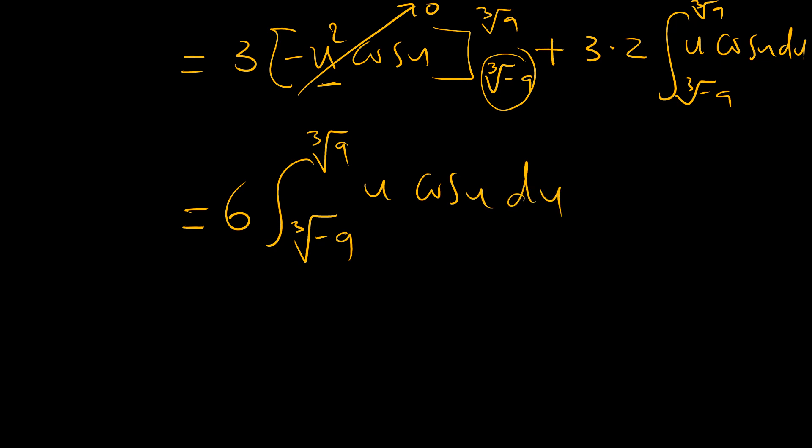By the way, the 6 comes from multiplying 3 and 2. We're going to use integration by parts again, where I would express cosine u as the derivative of sine u. This means that our problem now becomes 6u sine u.